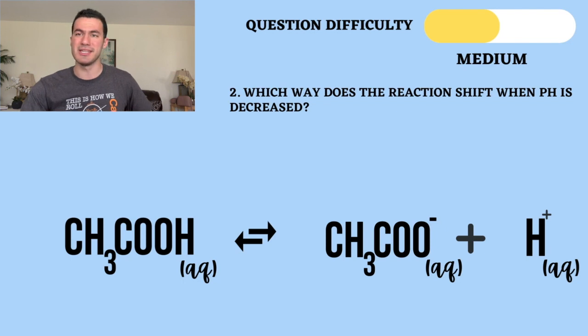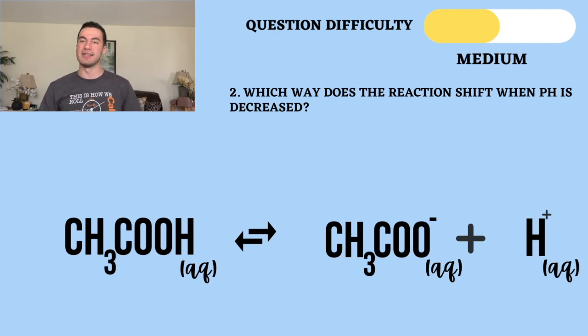And question two, we're starting to get a little more difficult. And the reason why is because the way question two is presented is not all that straightforward. The question is saying, which way does the reaction shift when pH is decreased? And some of you might be wondering, oh man, I don't know what happens when pH decreases.